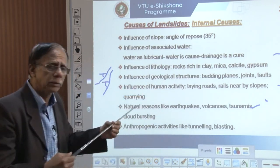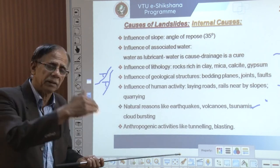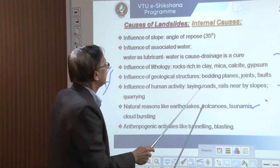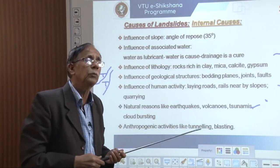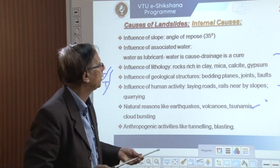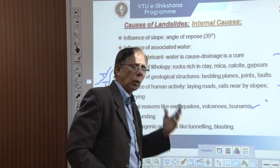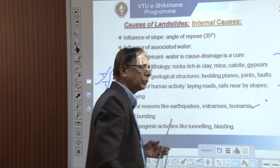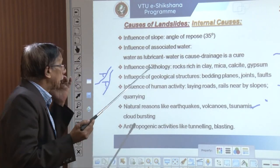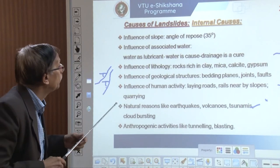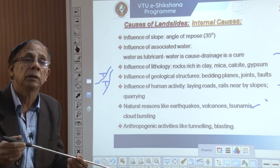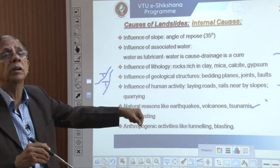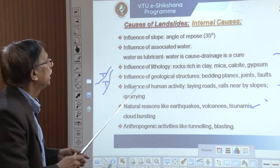The influence of lithology is another cause. Specific rock types can trigger and facilitate landslides. Rocks rich in clay — as explained, clay can swell and shrink. Mica is also a mineral that by virtue of its structure can swell and absorb a lot of water. Calcite is a soft mineral with cleavage that can be broken and weakened under normal pressure. Gypsum is similar. In addition, there are rocks rich in minerals like serpentine which have a slippery nature, commonly found in some metamorphic rocks. If such rocks are present, landslides are likely.